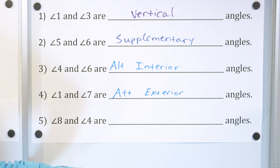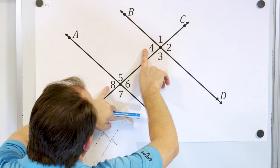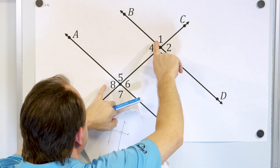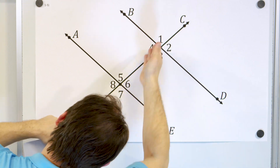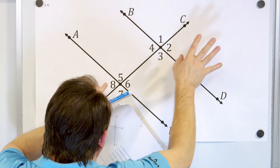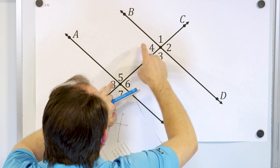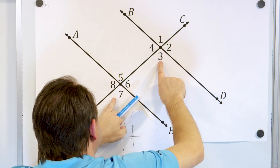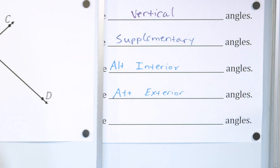Take a look at angle eight and angle four. Notice these have the same angle measure as well. These are actually called corresponding angles because — if you tilt your head — this is like the lower left-hand angle and so is this one. They're in the same position. They're not alternate or anything like that, so we just call them corresponding angles. Corresponding angles are equal because the parallel lines force the same angle to form.